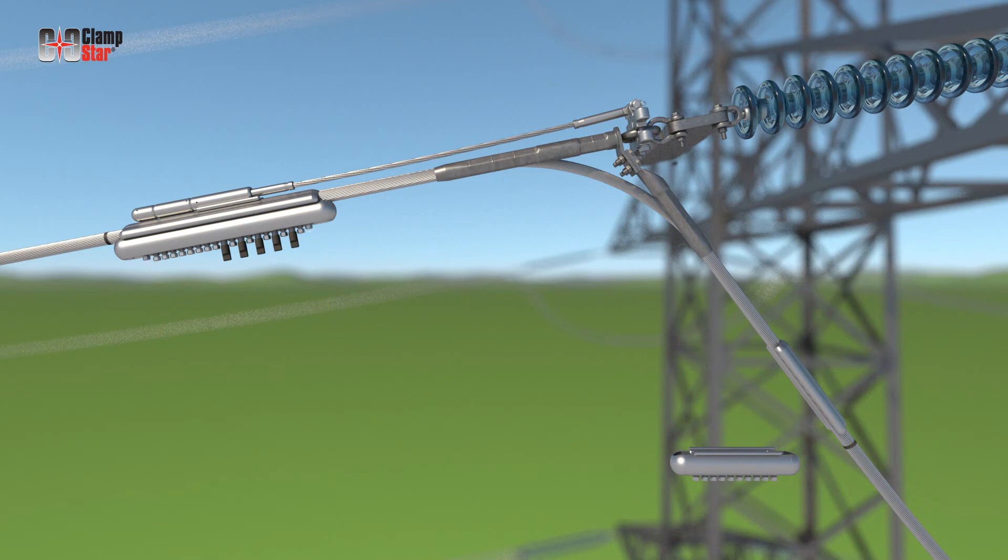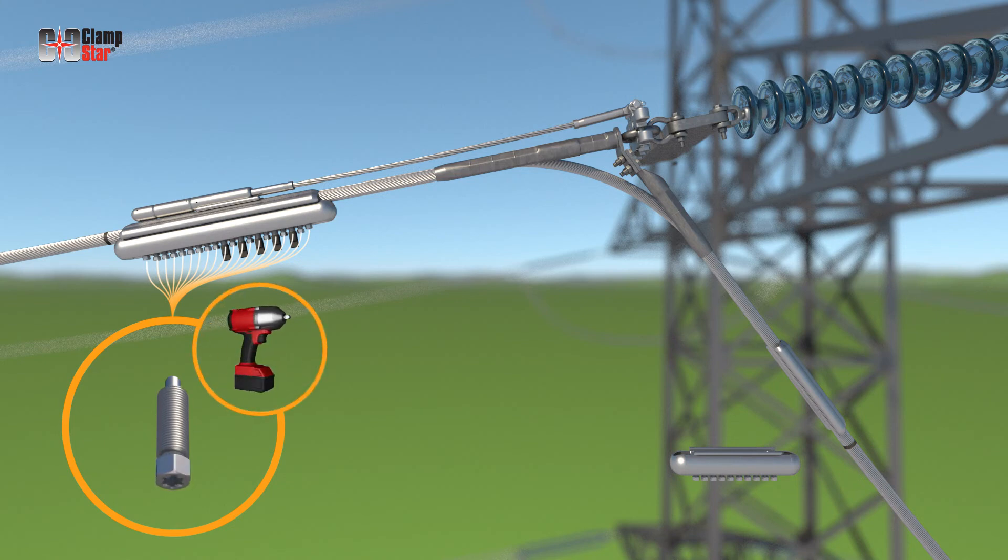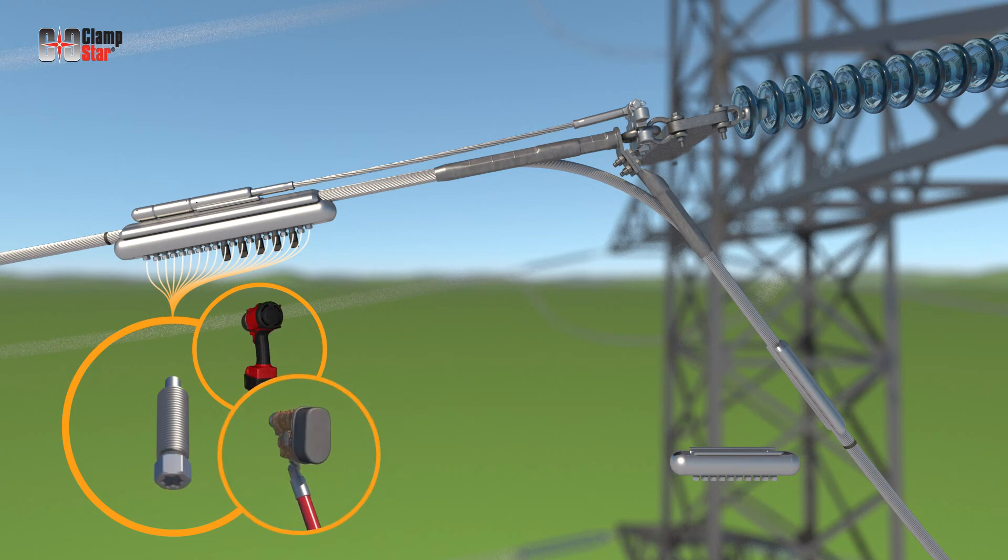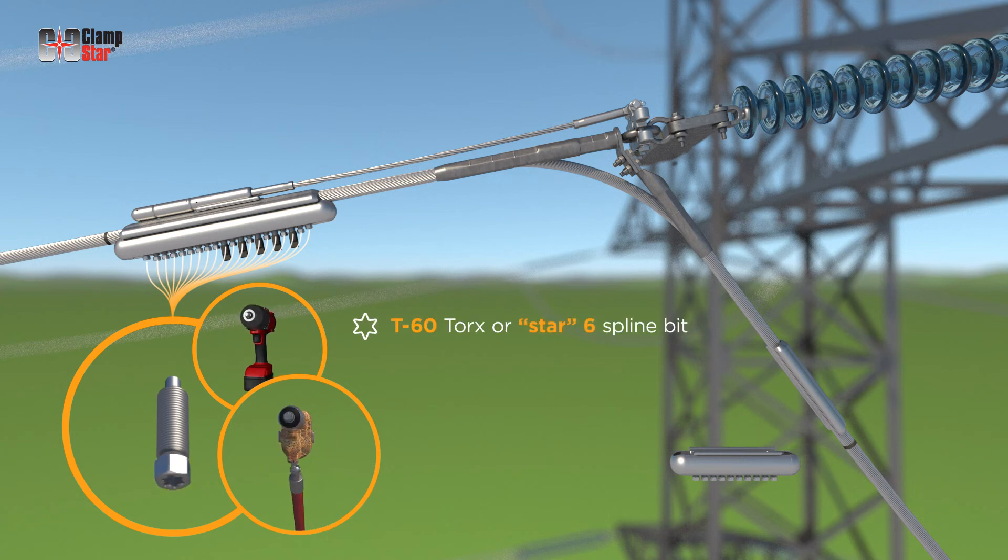Transmission class ClampStar units are supplied with unique bolts designed to shear at the appropriate torque level. The torque limiting bolt negates the need for a torque wrench, assures that proper fastener torque is achieved, and also provides inspectors a means to verify proper installation. To reduce installer fatigue and save a substantial amount of time, the use of power drivers, such as rattle guns or remote controlled snake guns, are recommended. The fasteners may be tightened with either a T60 Torx or six spline star bit or a three-quarter inch or 19 millimeter socket.